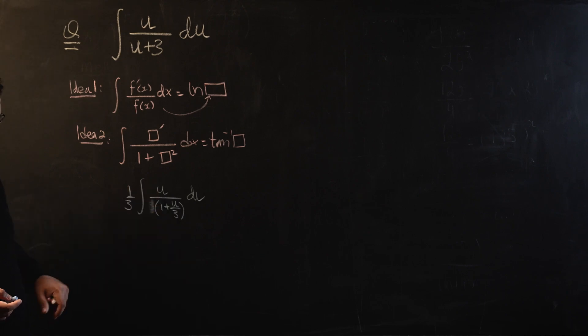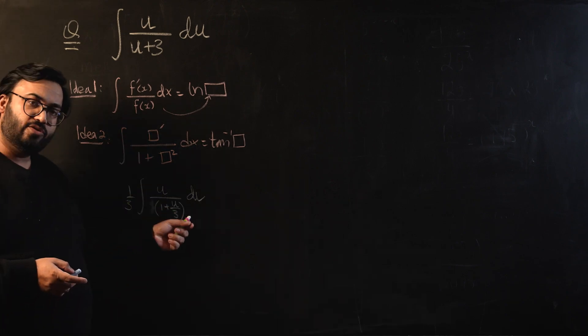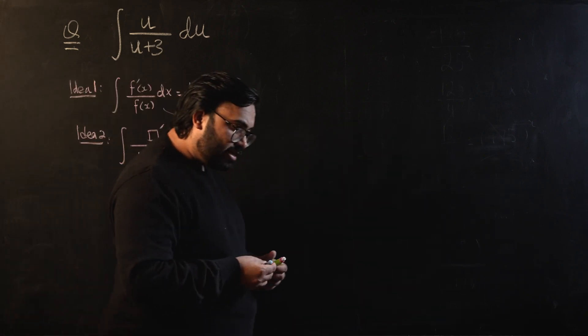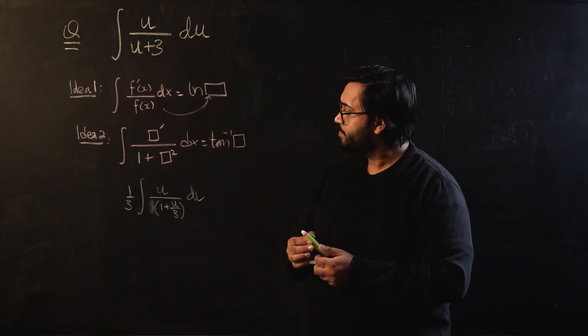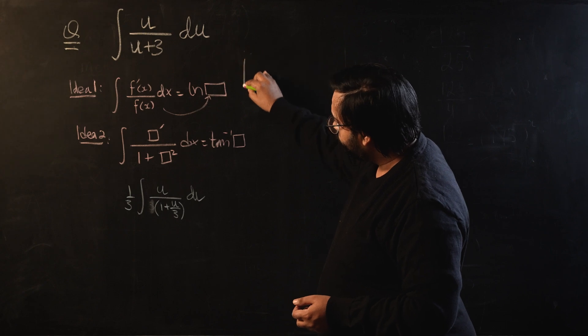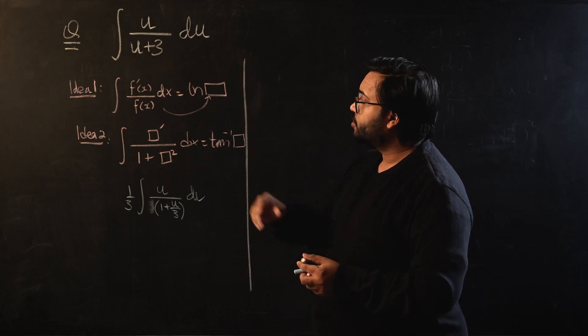Even if we take this 3 outside, it would be very difficult to make 1 plus something squared and differentiation of that should be u. So this idea will not work as well. So what should we do then?